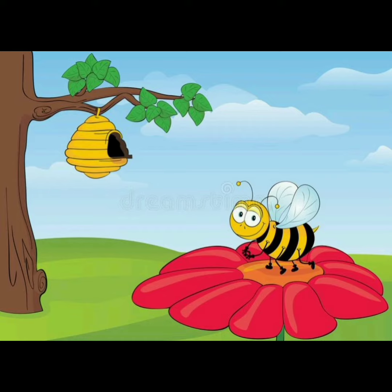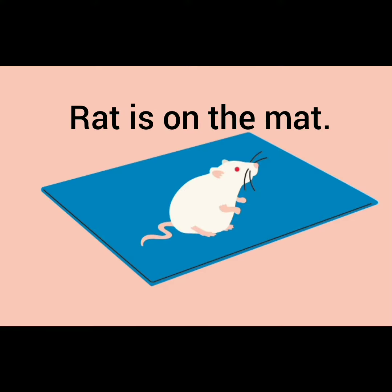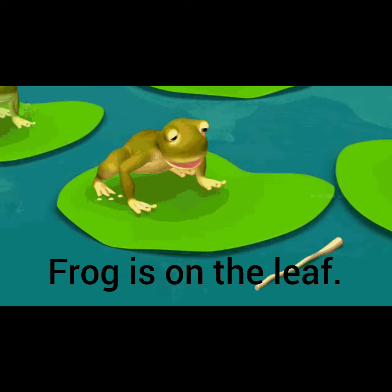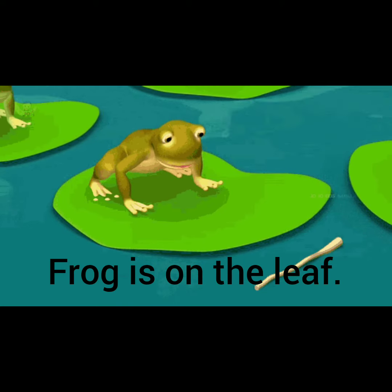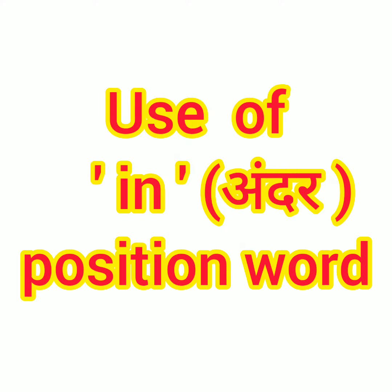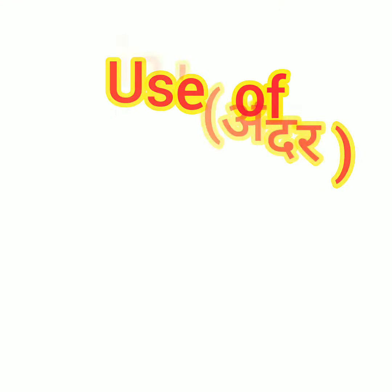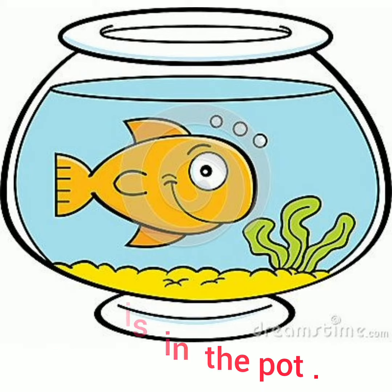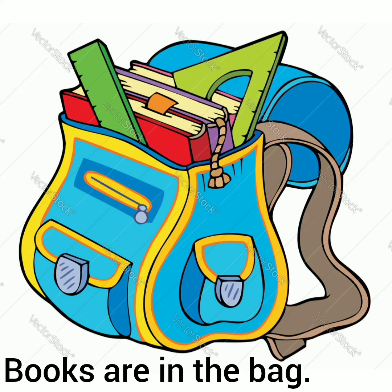The bee is on the flower. The rat is on the mat. The frog is on the leaf. Now let's learn the use of 'in' — position word. The fish is in the pot. Books are in the bag.